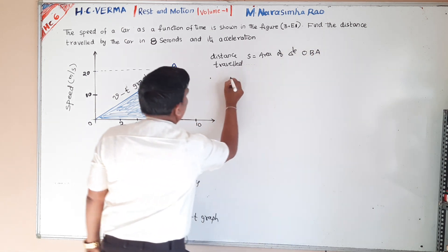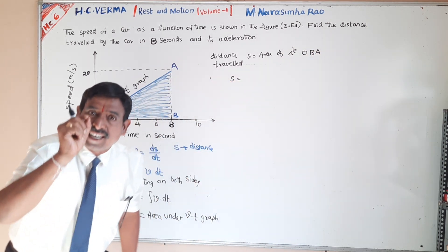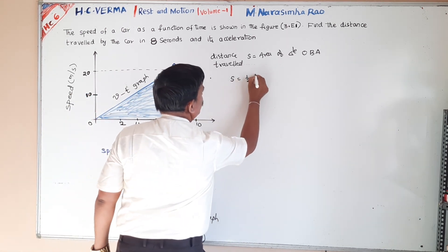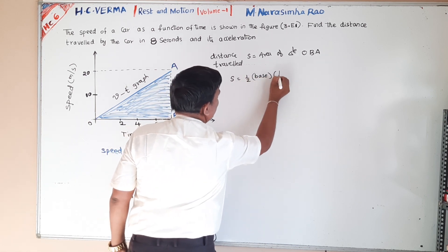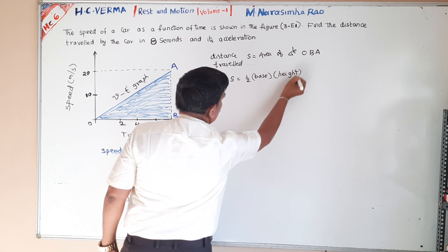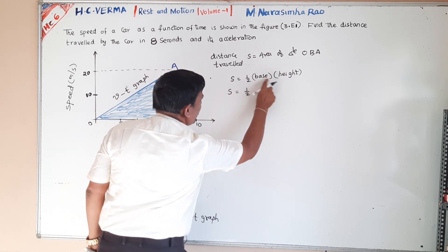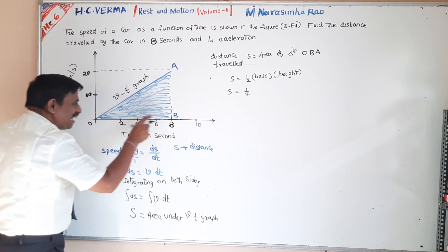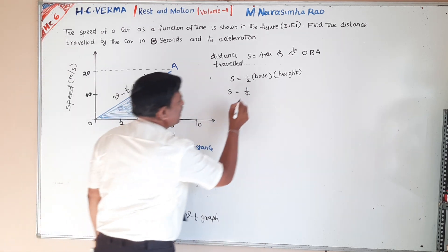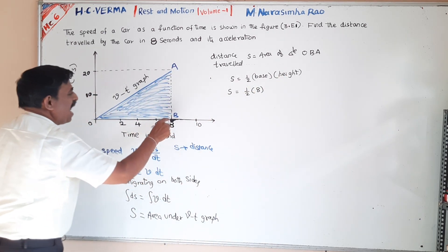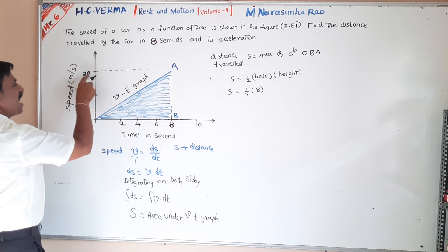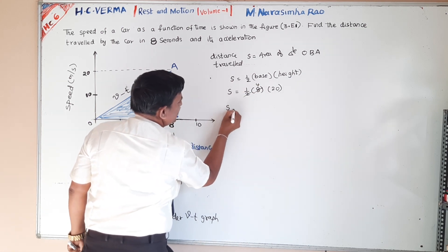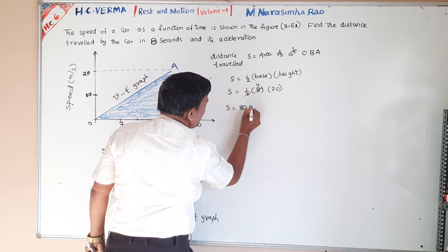S is equals to area of the triangle, using the formula: half into base into height. Base of the triangle is 8 units (seconds), height of the triangle is 20. So S equals half into 8 into 20 equals 4 into 20 equals 80 metres. Distance travelled is equals to 80 metres.